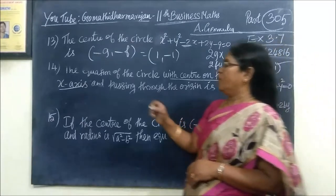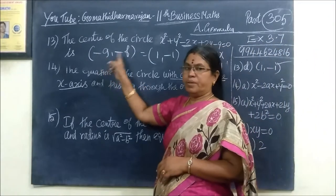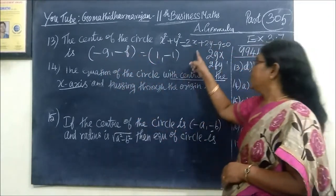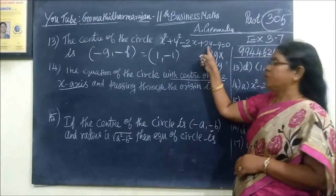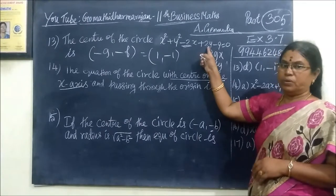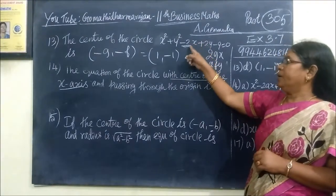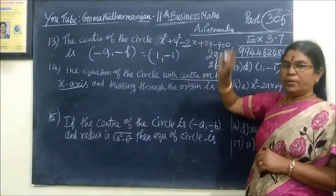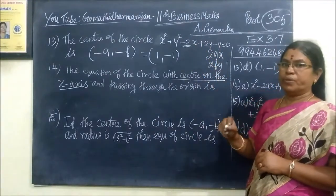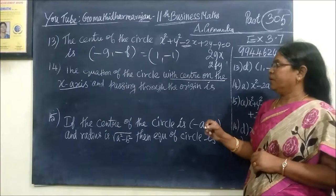Using the center formula (-g, -f), where 2g and 2f come from the equation, we take half of the coefficient values to find the center coordinates.